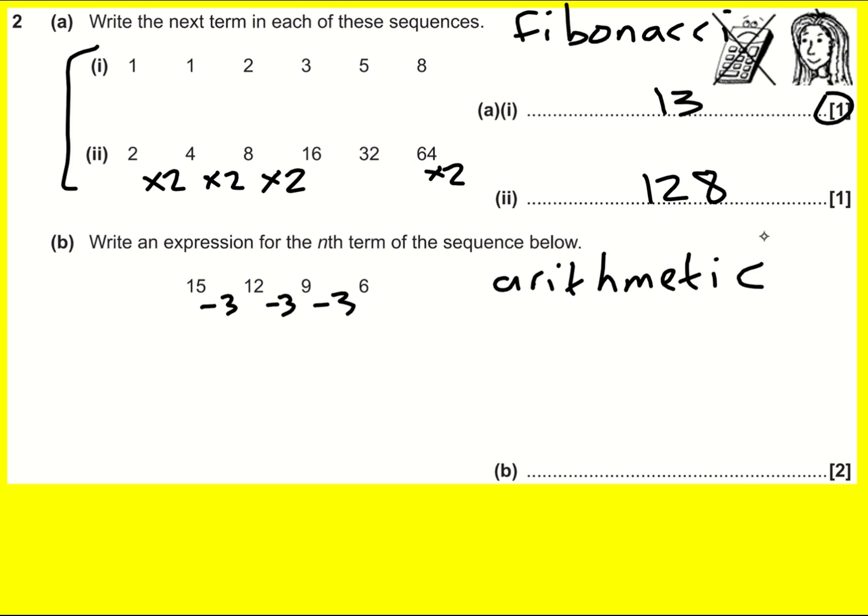We study it in a bit more detail. How do we find the nth term? Well, if it's going down by minus three every time, that means it's like the minus three times table. The minus three times table is minus three n, because